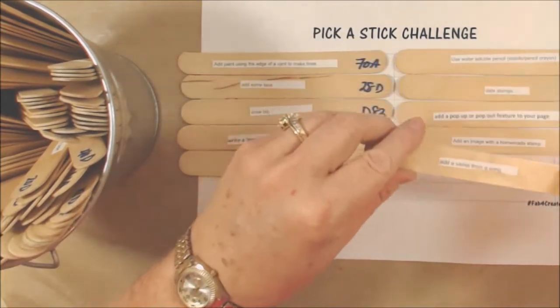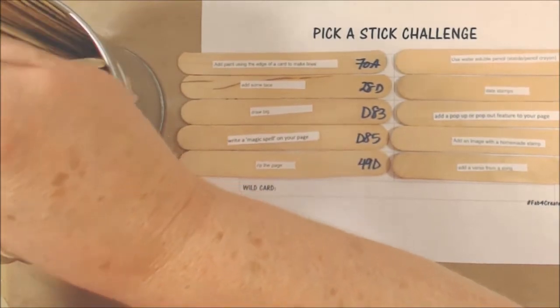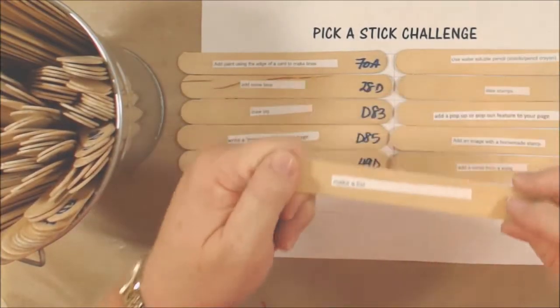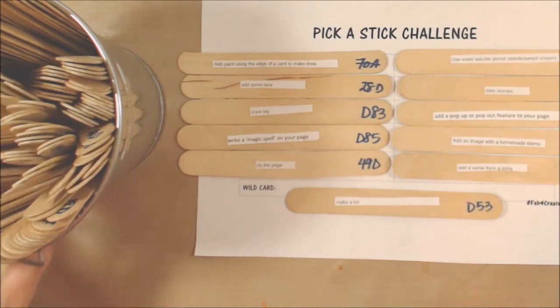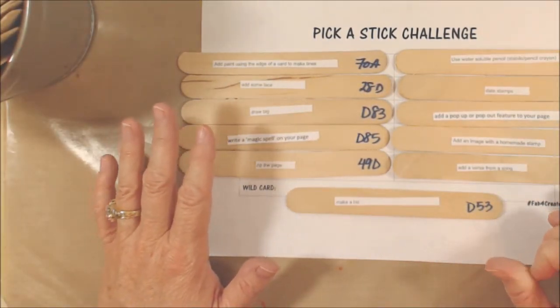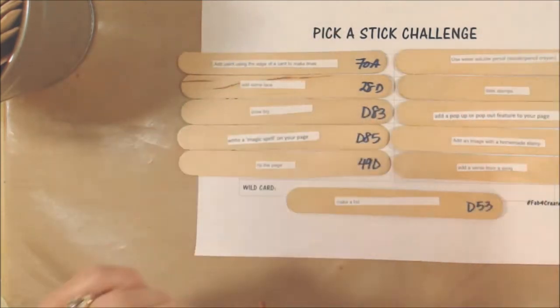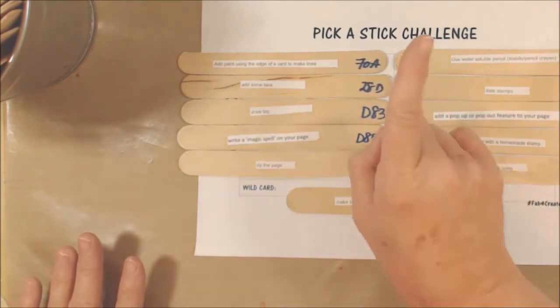Okay, step ten, add a verse from a song. And then let's draw the wild card. Make a list—that's your wild card. Okay, so let me type these real quick into the chart, and then I'll come back and we will draw from these the steps for the three-step ATC challenge. Okay, be right back.